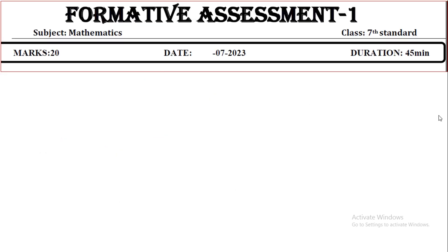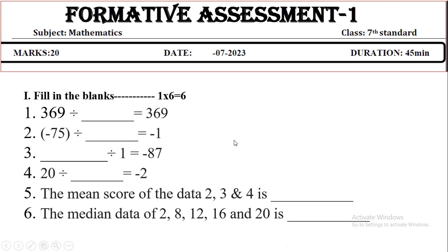This is the key answer for the FA1 question paper for seventh standard. First main — fill in the blanks: 369 divided by 1 gives 369, so the answer is 1. Minus 75 divided by 75 equals minus 1, so the answer is 75. Any number divided by 1 gives the same number, so minus 87 divided by 1 is minus 87. For 20 divided by what gives minus 2, we need a minus sign, so the answer is minus 10.